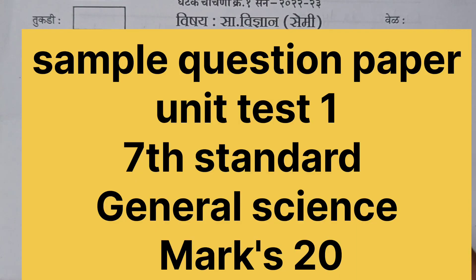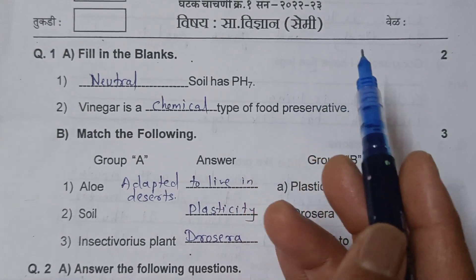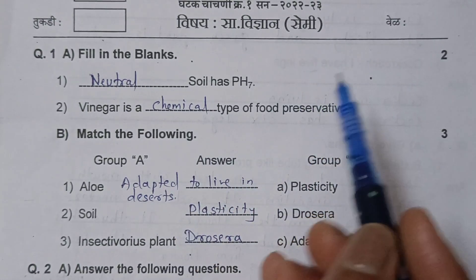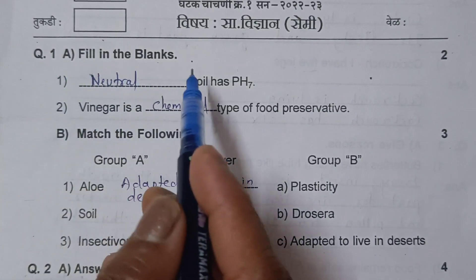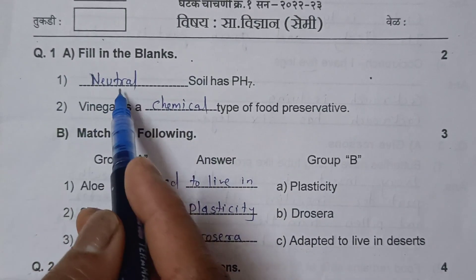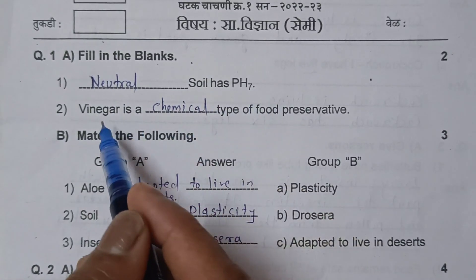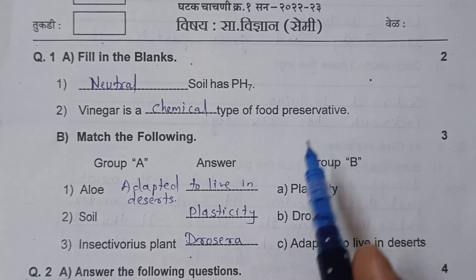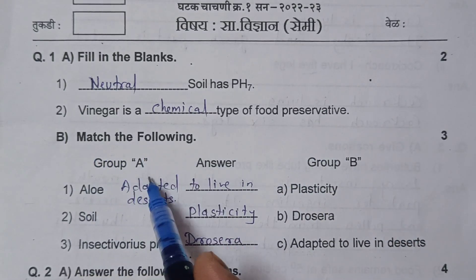First unit test, General Science, Semi-English medium, 7th standard, marks 20. Question number 1: Fill in the blanks. Neutral soil has pH 7. Vinegar is a chemical type of food preservative.